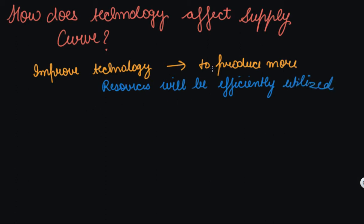If you improve your technology, your resources will be efficiently utilized. And if your resources are efficiently utilized, then your cost of production will reduce. And if your cost reduces, your profit increases.